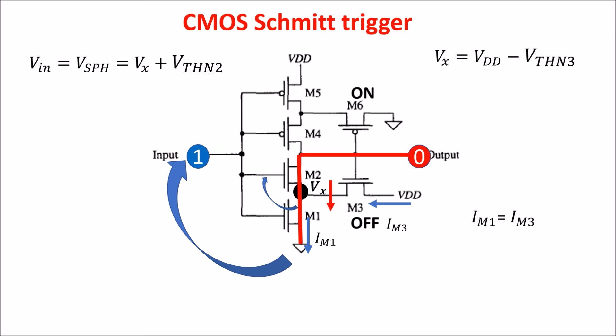So the decrease in output voltage is well defined. If we keep the input at a high value, nothing changes on the output. M6 is on and point Y is at the threshold voltage of M6. If we start lowering the input voltage, replicating the reasoning for the P portion of the circuit, we have to decrease it to VSPL to make the output switch to high again. In this way, adding M3 and M6 to an inverter configuration, we create the hysteresis we wanted.